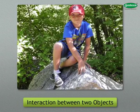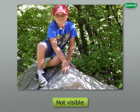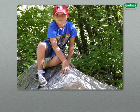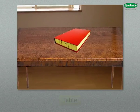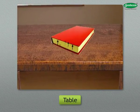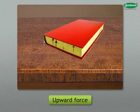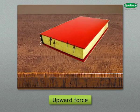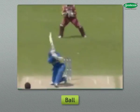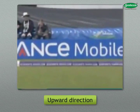Force is an interaction between two objects. Force is not visible, but we can see the effects of force. For example, when a book is kept on a table, the table exerts an upward force on it, but it is not visible. All that you observe is the book remaining stationary. When a ball is hit on the ground, it bounces in an upward direction. This is the visible effect of force.